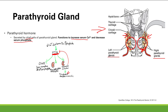PTH release is triggered by decreased calcium or increased phosphate — that makes sense since the whole function of parathyroid hormone is to increase calcium and decrease phosphate. Low vitamin D also triggers PTH because vitamin D normally inhibits PTH secretion. If you have less vitamin D, you get less blockage and increased PTH.